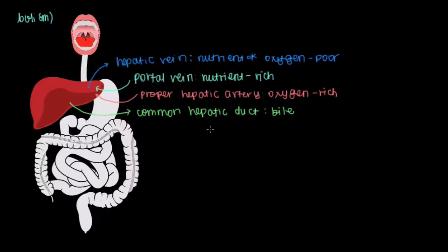So we've talked about a lot of vessels here. The main three that we should focus on are the portal vein, the hepatic artery, and the common hepatic bile duct.